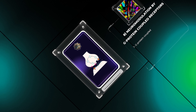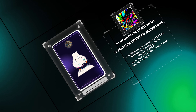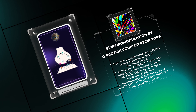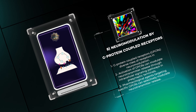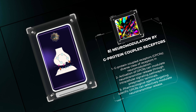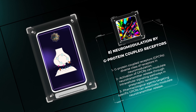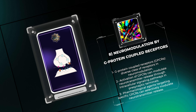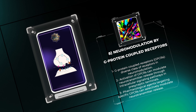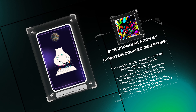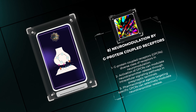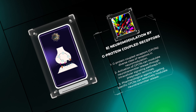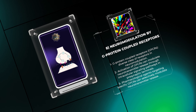G-protein-coupled receptors, GPCRs, are a diverse class of receptors that play a vital role in neuromodulation. Activation of GPCRs can modulate neurotransmitter release by influencing intracellular signaling pathways in presynaptic terminals. Pharmacological agents targeting specific GPCRs can selectively modulate neurotransmitter release, providing a means to fine-tune neuronal activity and signaling.